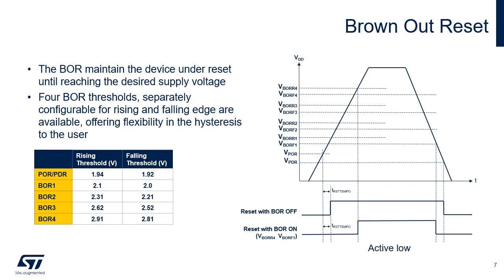When exiting standby mode, all registers powered by the main regulator are reset. When exiting shutdown mode, a power reset is generated. When the BOR is enabled, 4 BOR levels can be selected through option bytes with independent configuration for rising and falling thresholds.